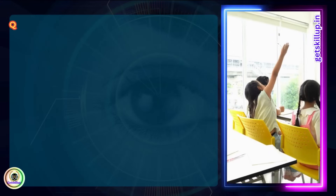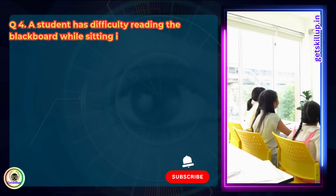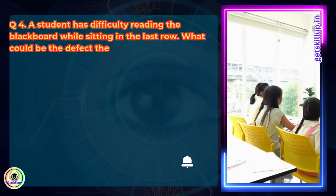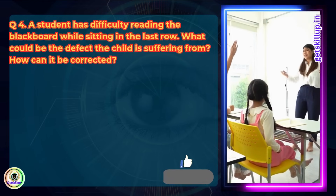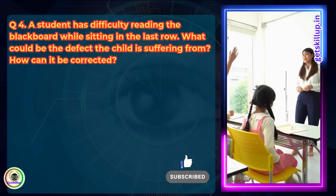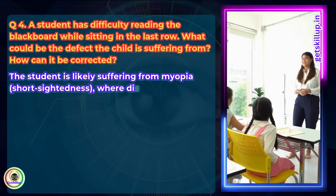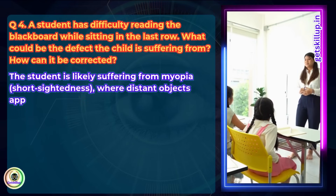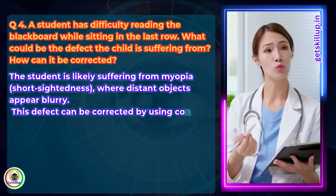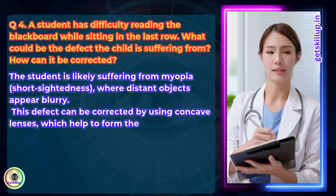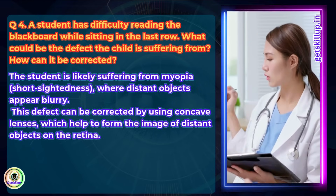Question 4: A student has difficulty reading the blackboard while sitting in the last row. What defect is the child suffering from? How can it be corrected? The student is likely suffering from myopia, or short-sightedness, where distant objects appear blurry. This defect can be corrected by using a concave lens, which helps to form the image of distant objects on the retina.